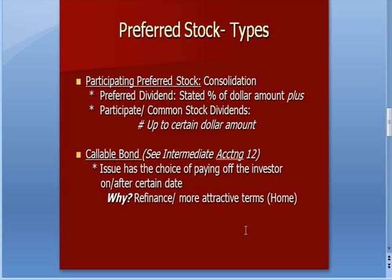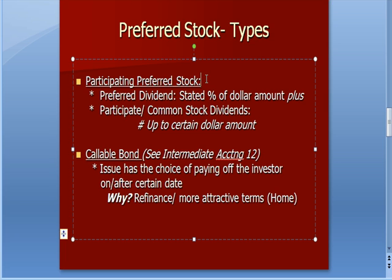We can also have participating preferred stock. By participating, that refers to participating with common shareholders. Going back to our $50 preferred stock example — I'm supposed to get $50 a year, but I also have the opportunity to participate in a common stock dividend up to a certain percentage of par. So if the company has a great year with a lot of earnings and declares larger than normal dividends, I as a preferred shareholder would get my $50 annually, plus a portion of the dividend paid to common shareholders.